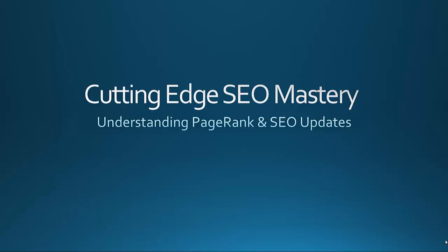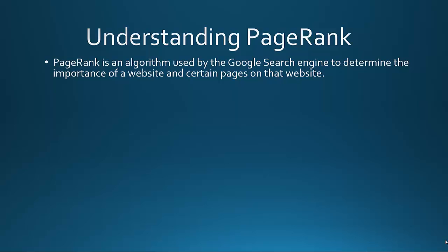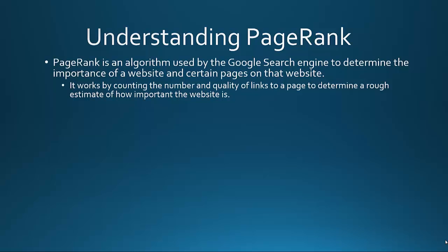In this video, we will discuss understanding PageRank and SEO updates. PageRank is an algorithm used by the Google search engine to determine the importance of a website and certain pages on that website. It works by counting the number and quality of links to a page to determine a rough estimate of how important that website is.